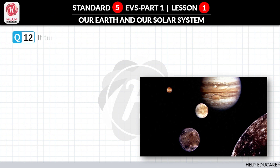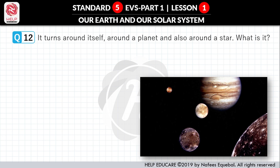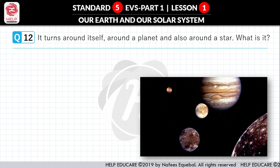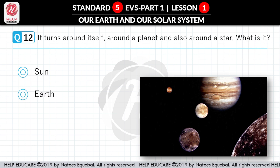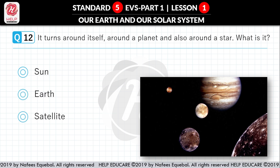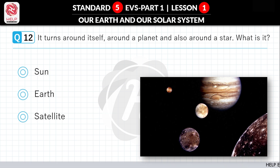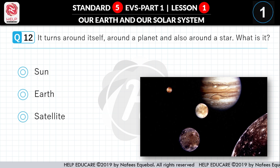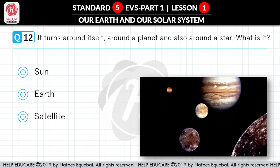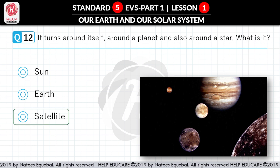Question No. 12: It turns around itself, around a planet, and also around a star. What is it? First option: Sun. Second option: Earth. Third option: Satellite. Correct answer is Satellite.